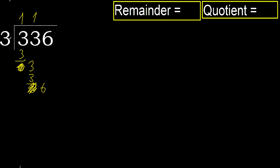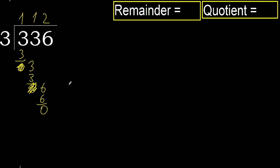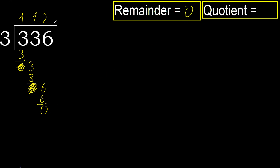Next, bring down 6. 3 multiplied by 2 is 6 — 6 is not greater. Subtract 0. Next, that is not a number. Therefore, finish it: 336 divided by 3 is 112.